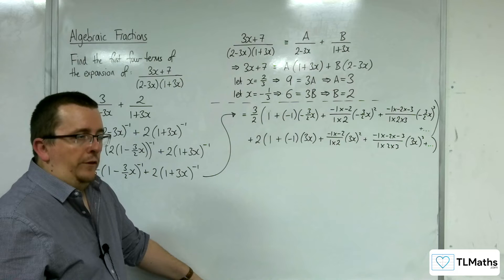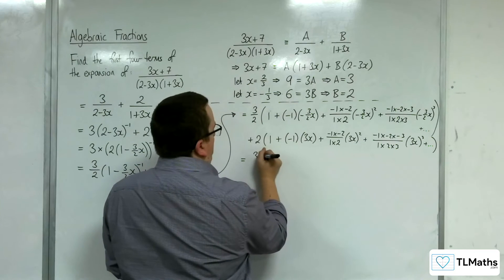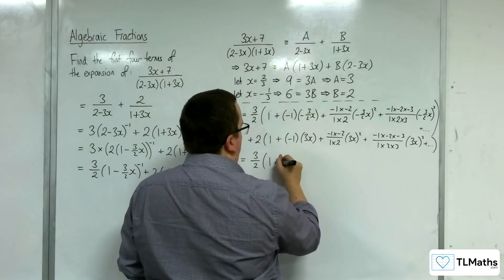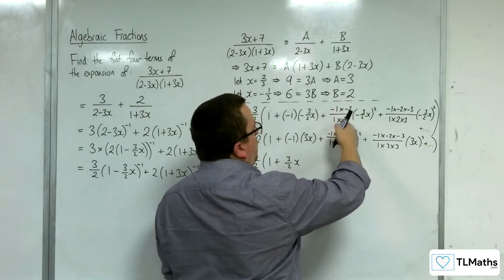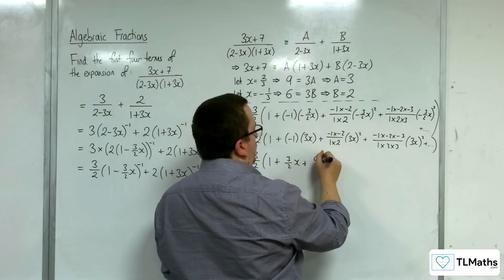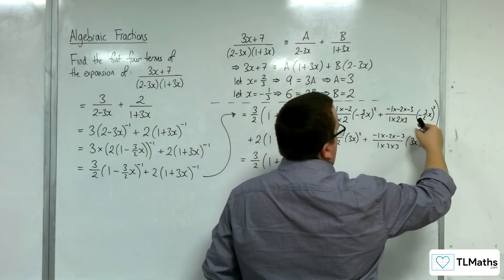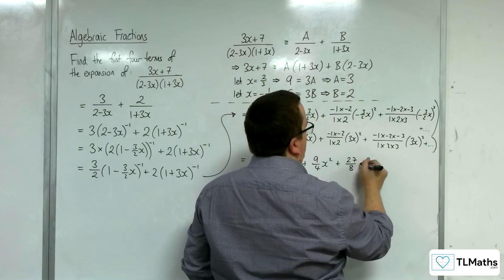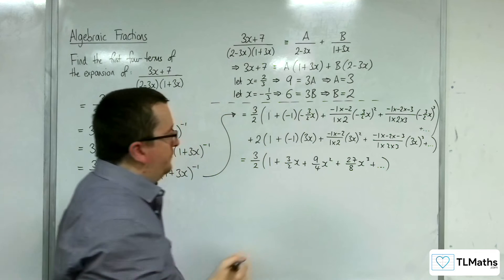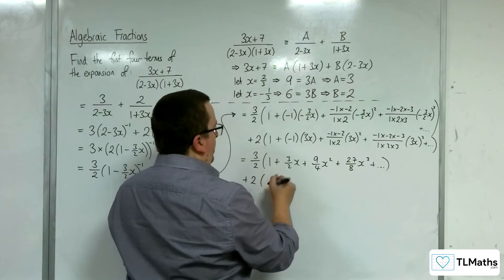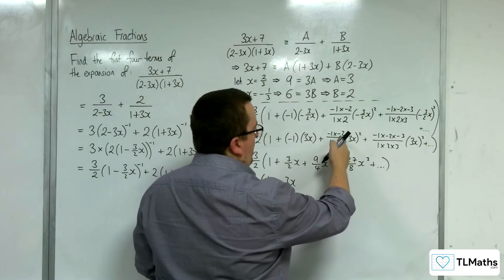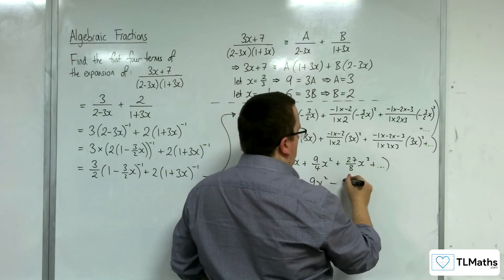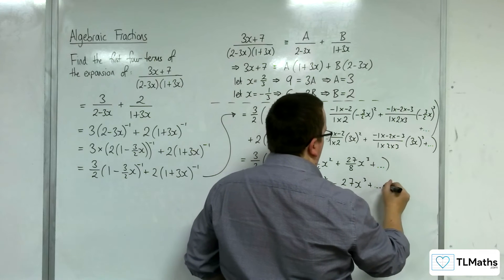Now I simplify. For the first bracket with n = −1 and x replaced by −(3/2)x: the terms become 1, +(3/2)x, +(9/4)x², +(27/8)x³. For the second bracket with n = −1 and x replaced by 3x: the terms become 1, −3x, +9x², −27x³.